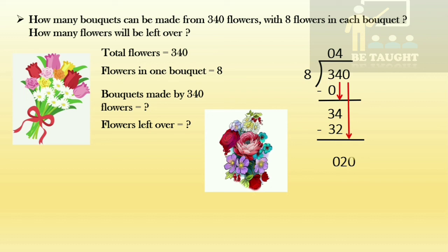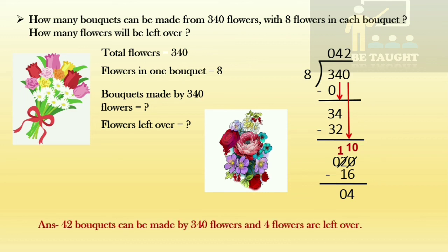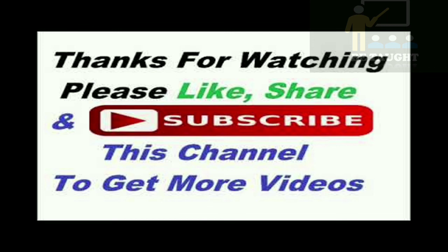Bring the zero down; we get 20. Twenty in the eight times table — eight twos are 16. Zero minus six is not possible, so we borrow from the tens place. The zero becomes 10 and the digit before becomes 1. Ten minus six is 4, one minus one is 0. Final answer: 42 bouquets can be made from 340 flowers and 4 flowers are left over. I hope you have understood the lesson and enjoyed watching the video. Thank you for watching — please like, share, and subscribe to my channel. Stay tuned for more videos. Bye bye!